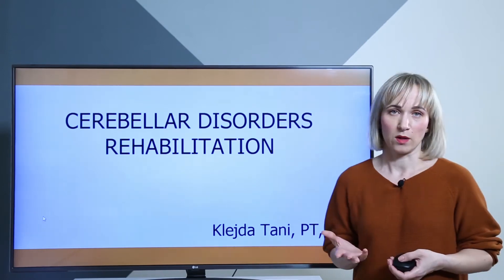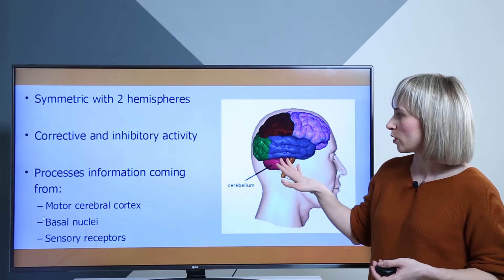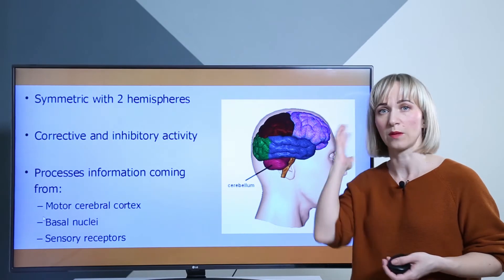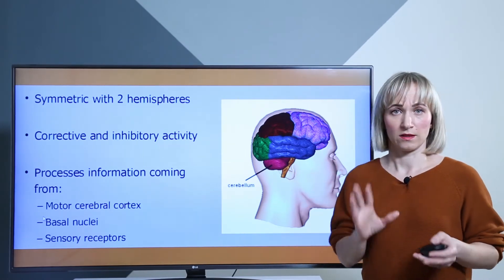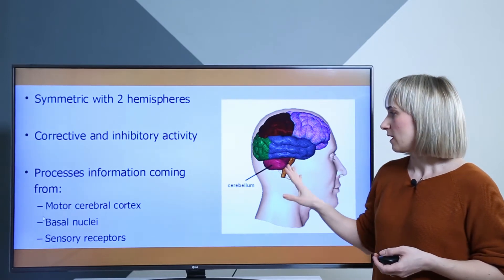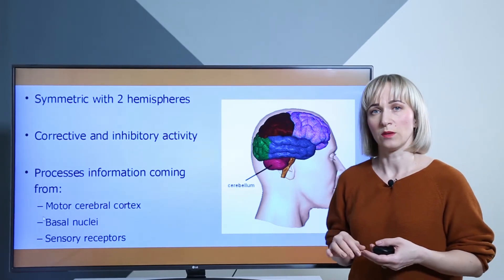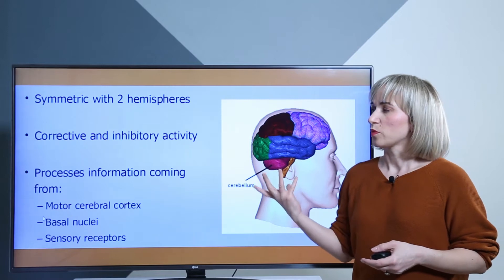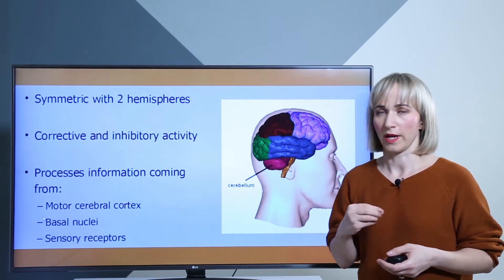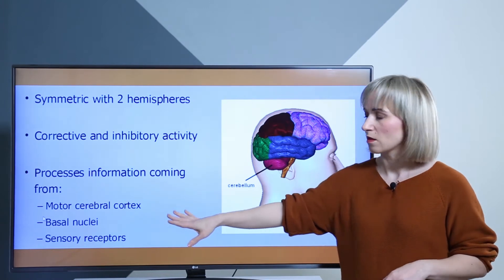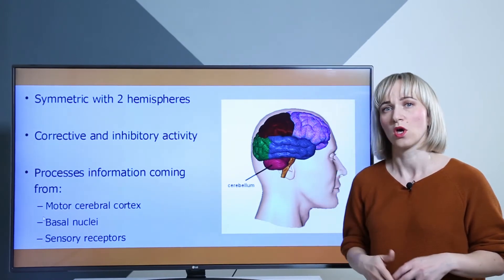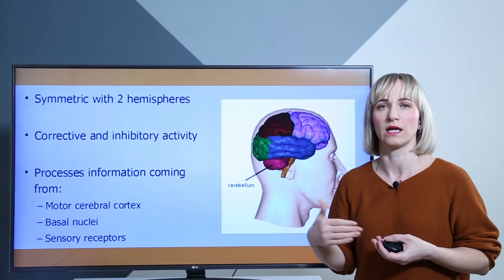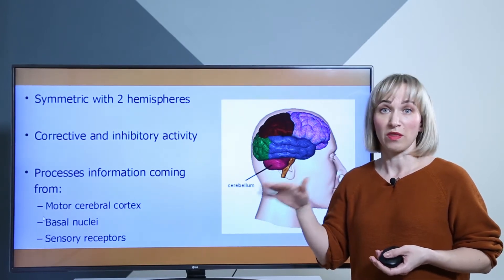What is the cerebellum and what are its pathologies? The cerebellum is part of our central nervous system, located in the occipital part of our head. It is symmetric with two hemispheres, and its main activity is corrective and inhibitory activity of our body and movements. The cerebellum processes information from the motor cerebral cortex, the basal nuclei, and sensory receptors.